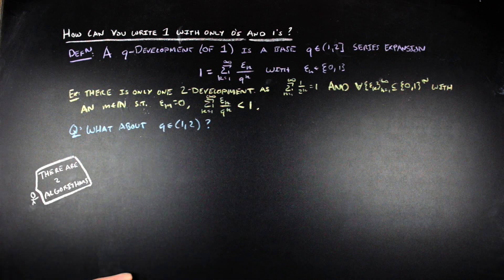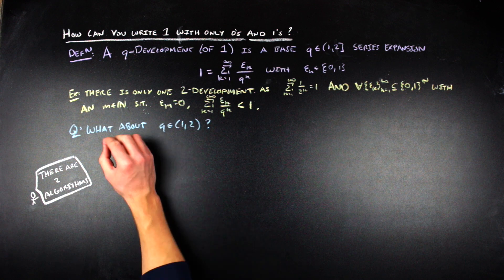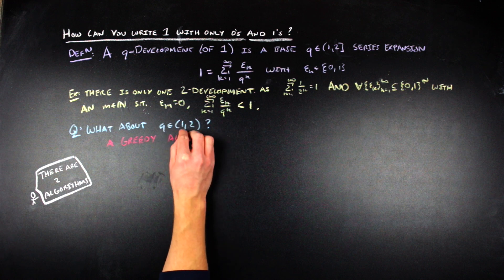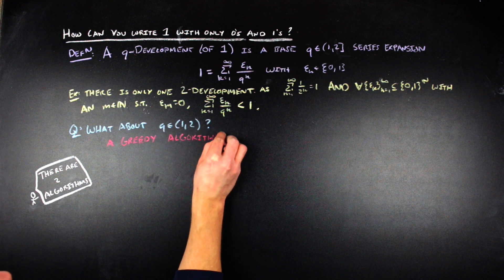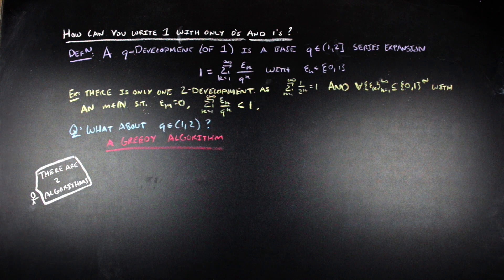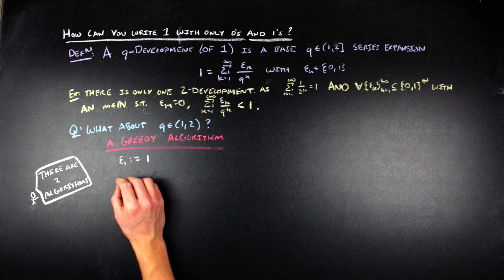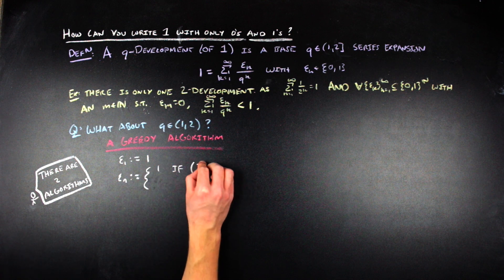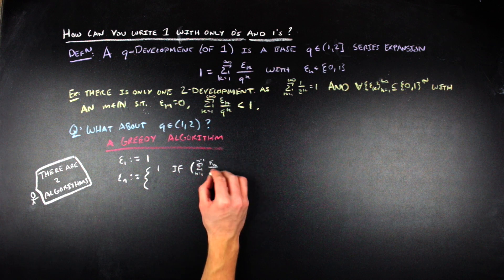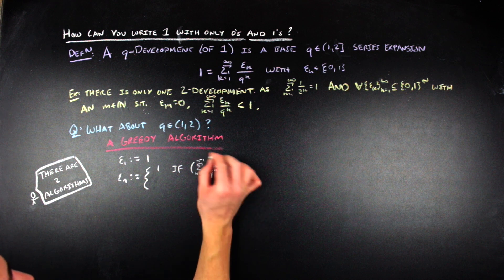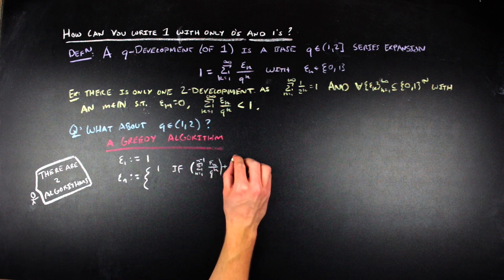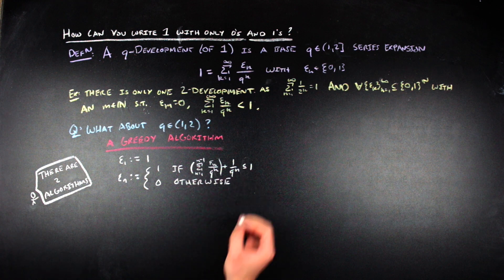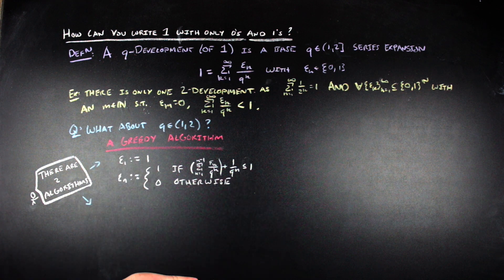In a greedy algorithm, we try to take as much as possible. In this particular case, we take as much of a portion of 1 as we can at each step without exceeding 1. So we start our expansion with a 1, and then for everything after that first term, we see if we can get away with using a 1 in that position. If we can — meaning the sum up to that point plus the new term is still less than or equal to 1 — we take it; if we can't, we use 0.